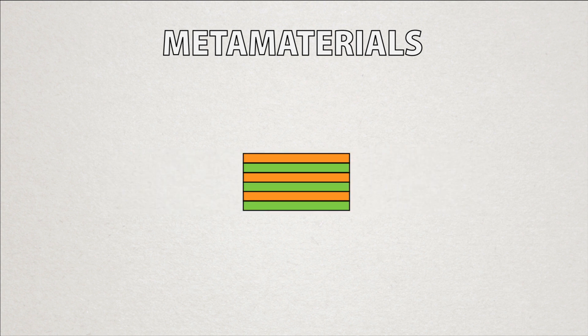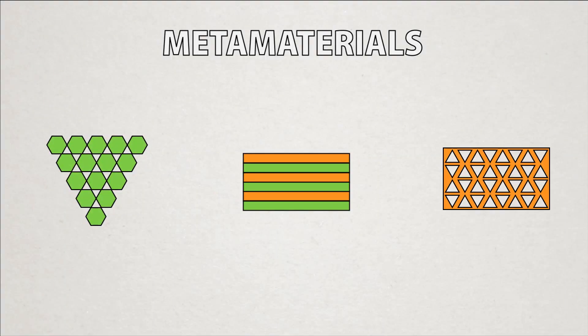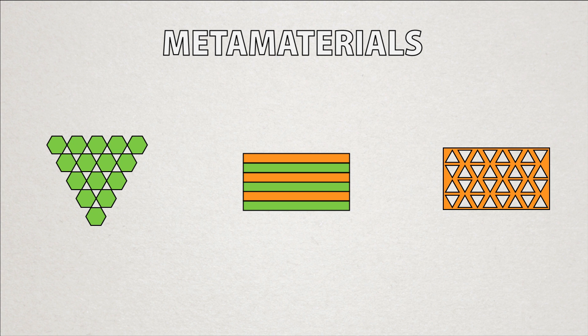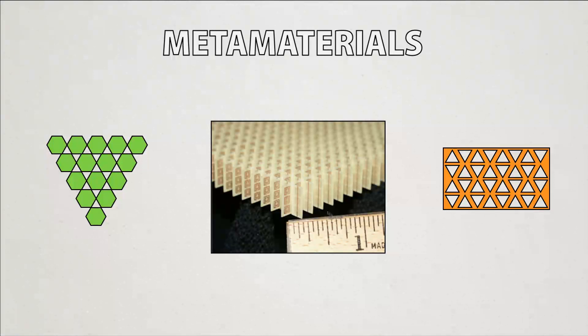They work both from combining inherent properties of the materials used, and by taking advantage of geometry to make extremely interesting properties. For example, a material that has a negative refractive index, which cannot be found naturally.